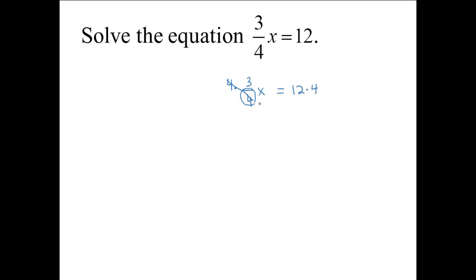4 divided by 4 gives us 1, so we have 1 times 3x equals, and 1 times 3 is 3, so we have 3x equals, and then 12 times 4 is 48.